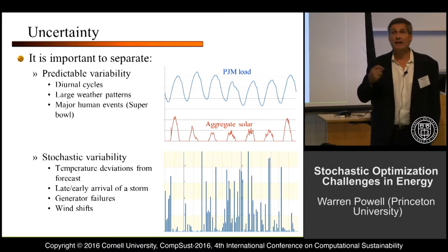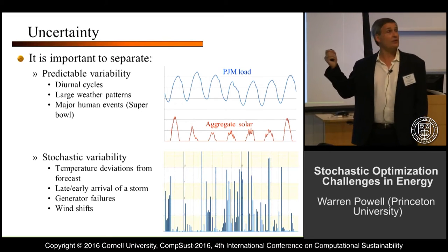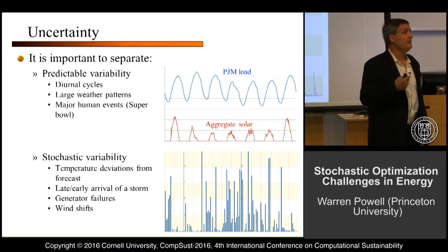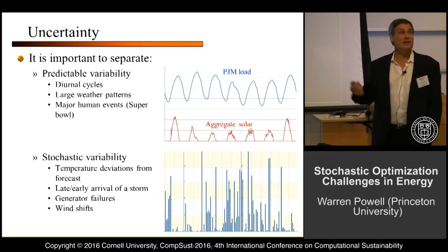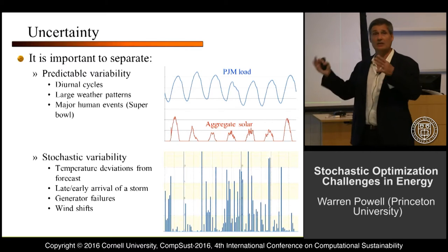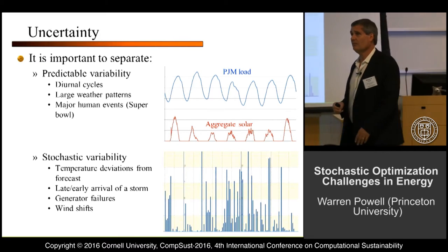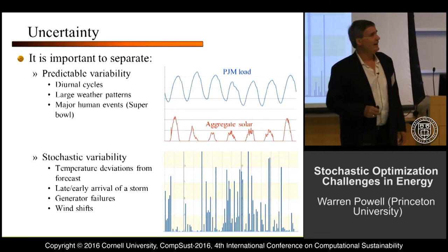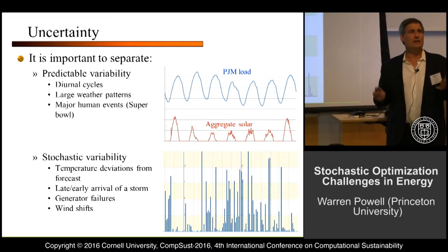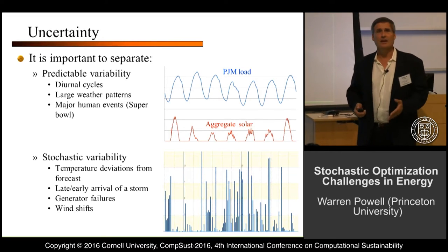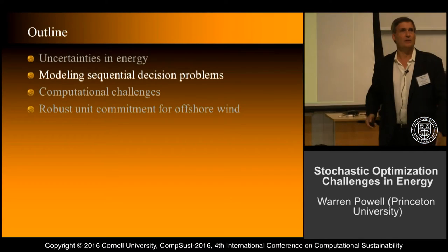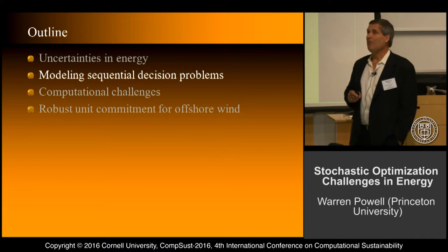One of the things we have to do is distinguish between predictable variability — such as the sun setting — and stochastic uncertainty, which comes in many different flavors. Different types of uncertainty have to be modeled. One of the themes I want to bring out is that as we work with real problems, not just proving theorems, if you actually want to solve a real problem you're going to end up spending a lot of time modeling. To optimize, you have to optimize a model. You need the right model. Modeling is a really big deal.